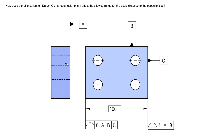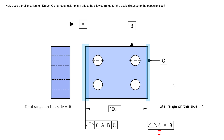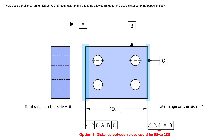The question submitted outlined three options of interpretation. The first interpretation would say we have four millimeters on the right surface — the feature control frame lists four millimeters as a total tolerance, meaning the surface can deviate two millimeters each way. The left surface has six millimeters total tolerance, so three millimeters each way. Together, option one suggests the distance between the two sides could be 95 to 105 millimeters.